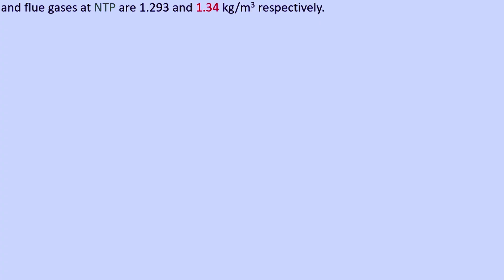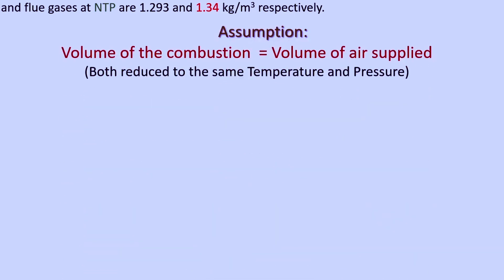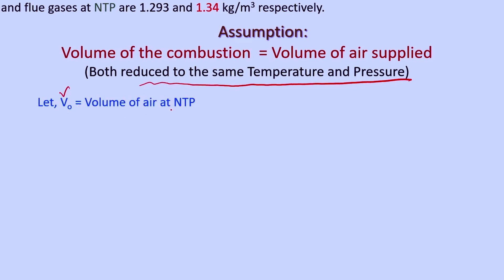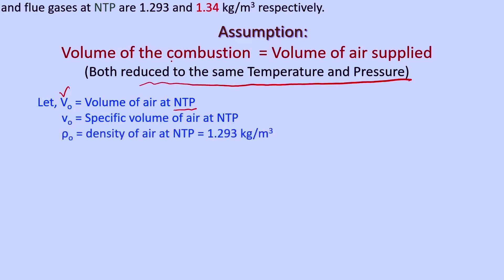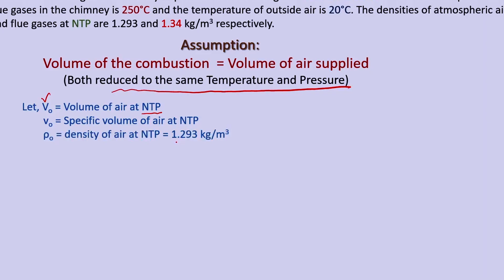To solve this problem we need to take one basic assumption: the volume of the flue gases equals the volume of air supplied when both are reduced to the same temperature and pressure — in this case, 0°C and 1 atmospheric pressure, that is normal temperature and pressure (NTP). Let capital V₀ be the volume of air at NTP, and small v₀ be the specific volume of air at NTP, where the density is 1.293 kg/m³.